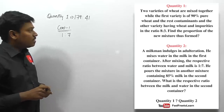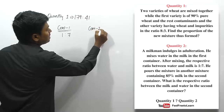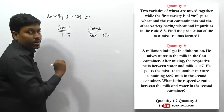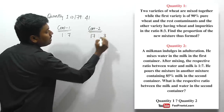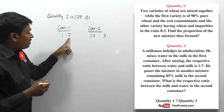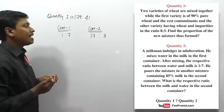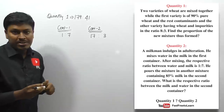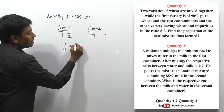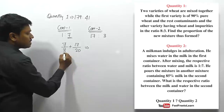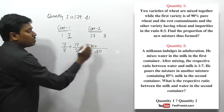Container one has milk:water as 7:1 (out of 8 parts), and container two has milk:water as 17:3 (out of 20 parts). To find the new ratio after mixing, milk fractions are 7/8 and 17/20. Taking LCM of 40: (7/8) = 35/40 and (17/20) = 34/40, total milk = 69/40.